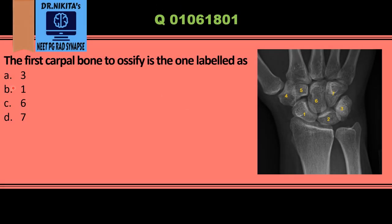In this question we are asked to identify the carpal bone which ossifies first. To identify the carpal bones, the mnemonic is 'she looks too pretty try to catch her' — I'm sure we all know it.